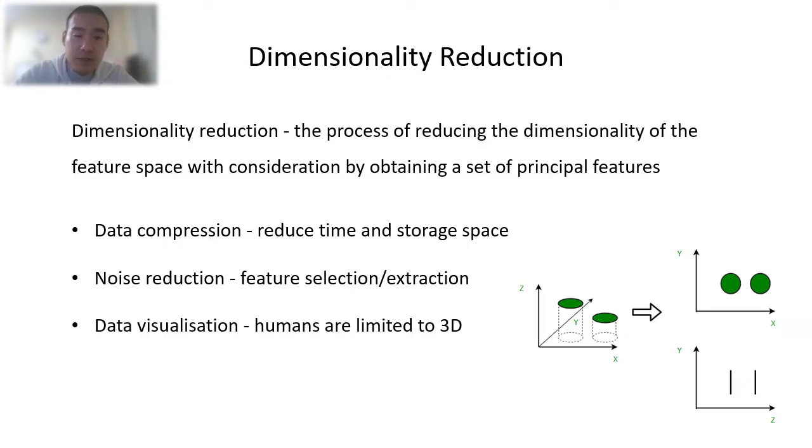For dimensionality reduction, here is how we can define it. It is the process of reducing the dimensionality of the feature space to get a set of low-dimensional features. And it is often used in data compression to reduce time and storage space. For example, recently, all tech companies are investing heavily in video compression techniques for the next generation of stream gaming.